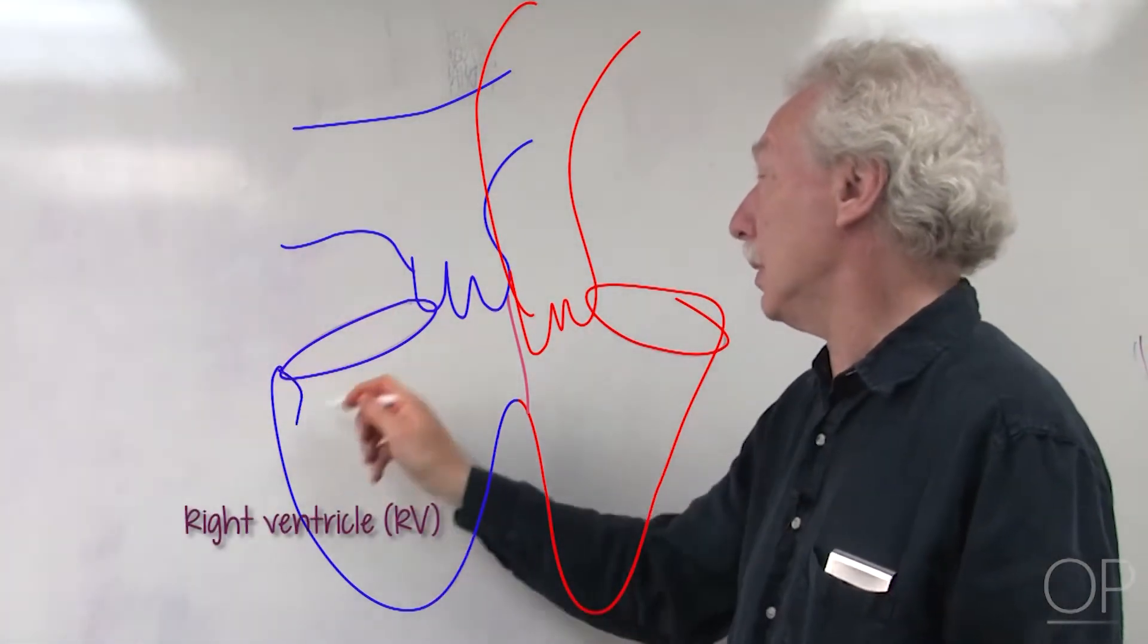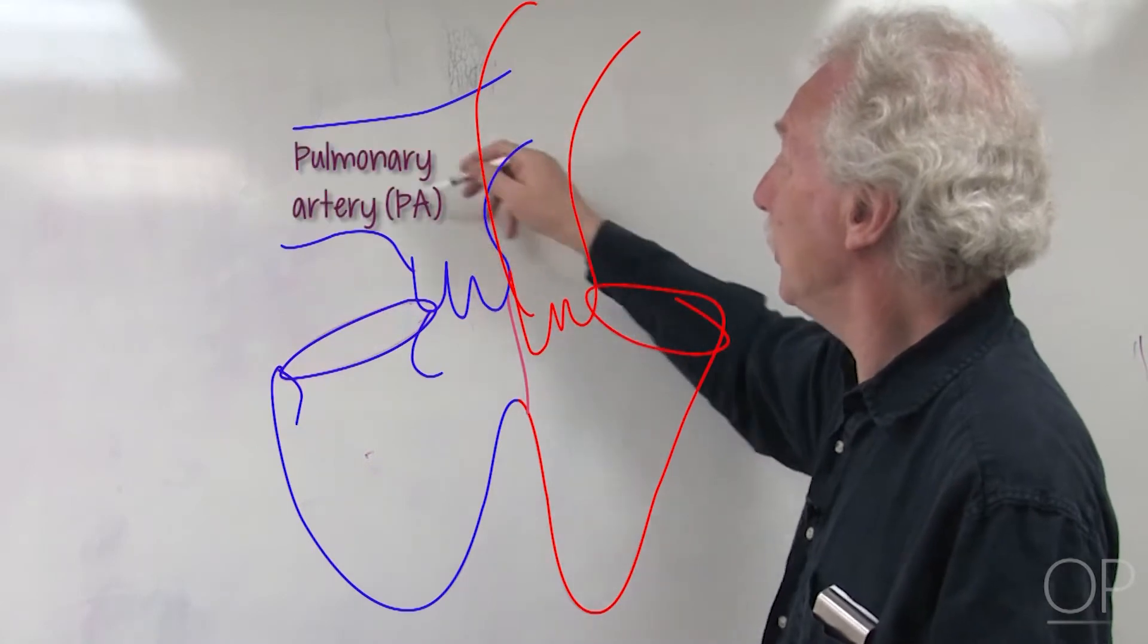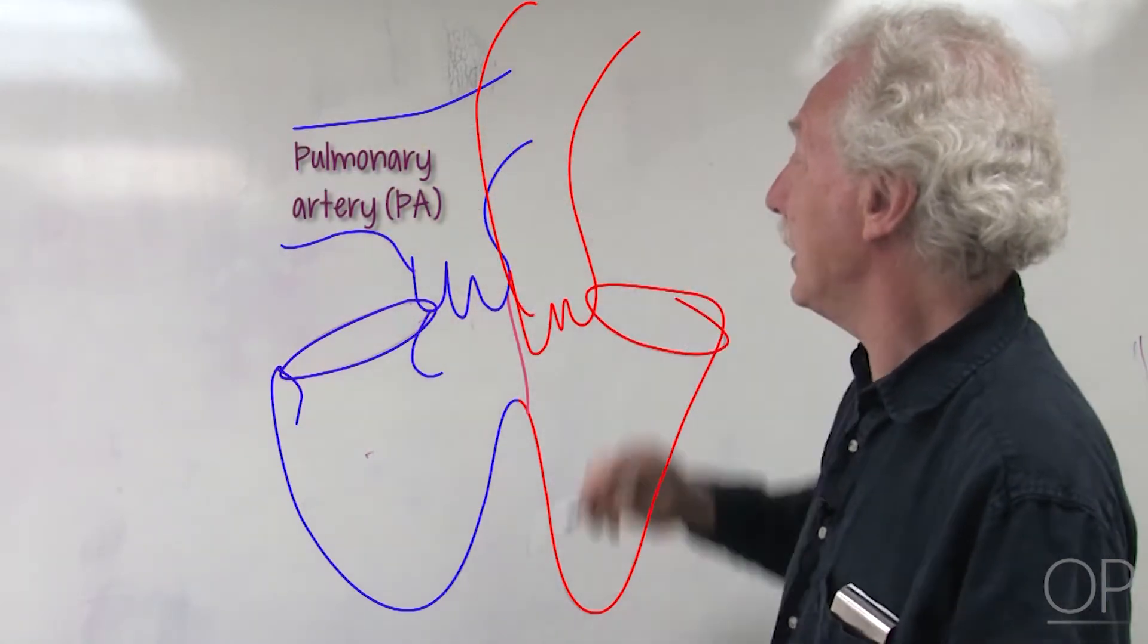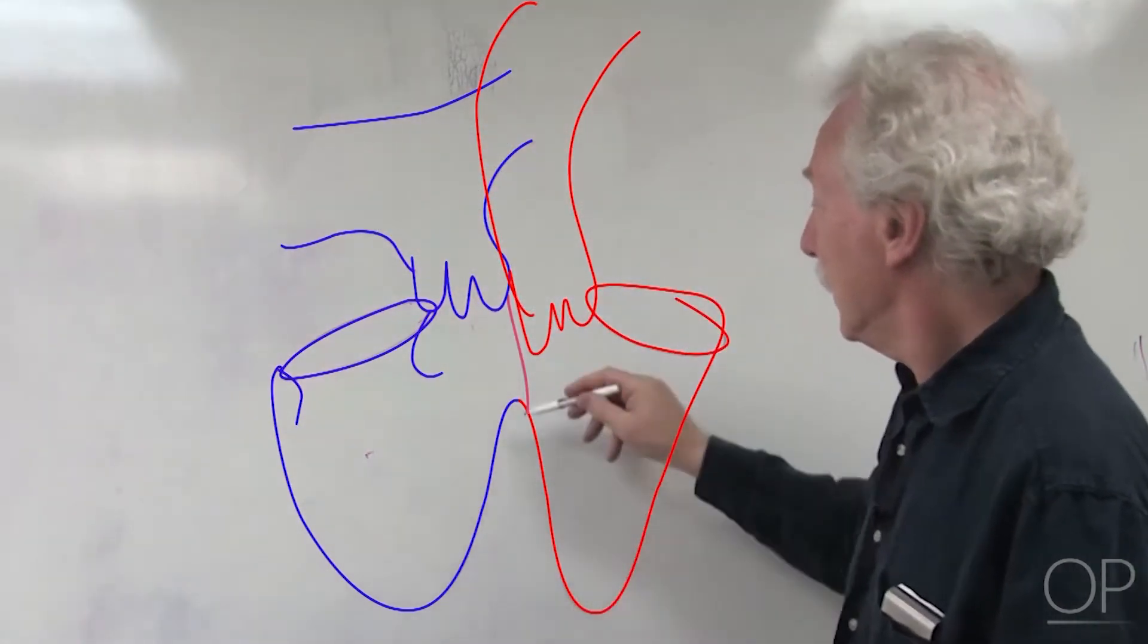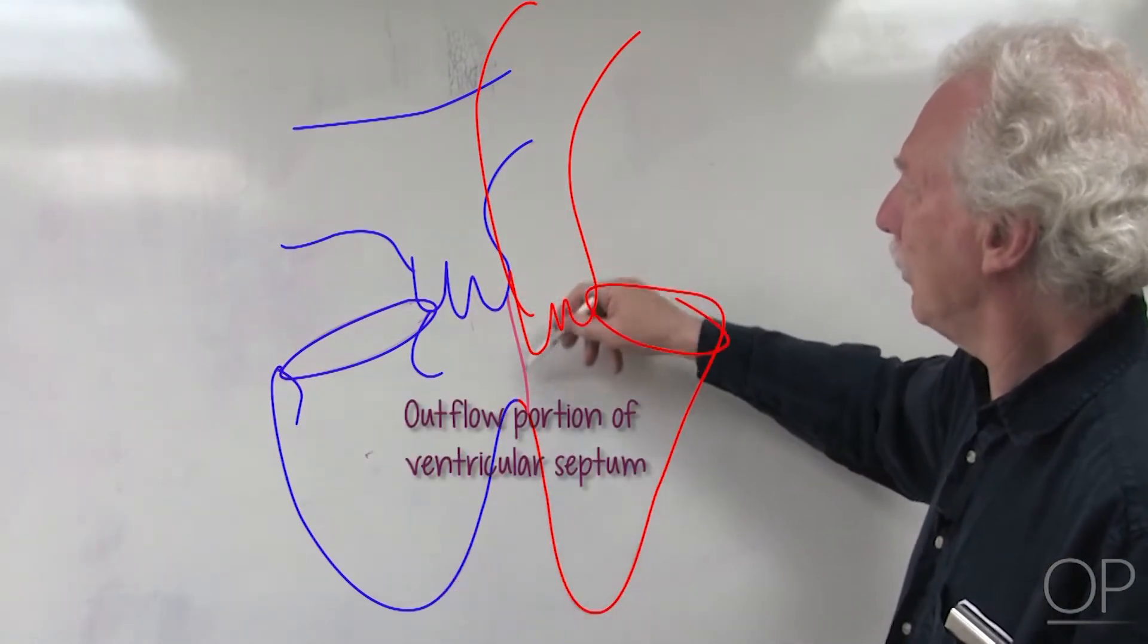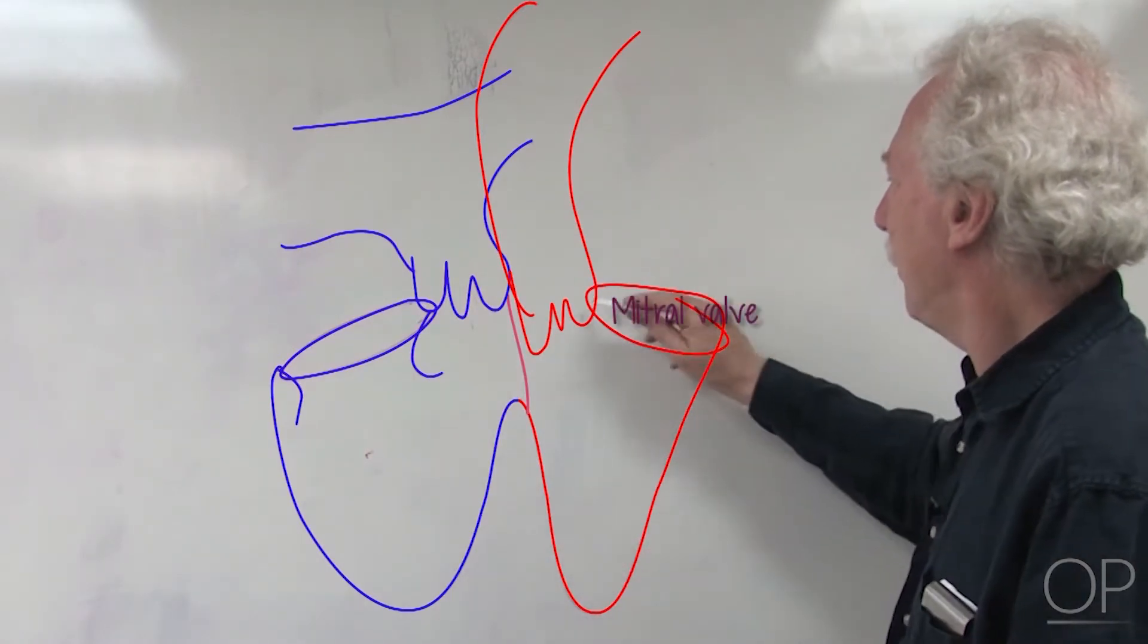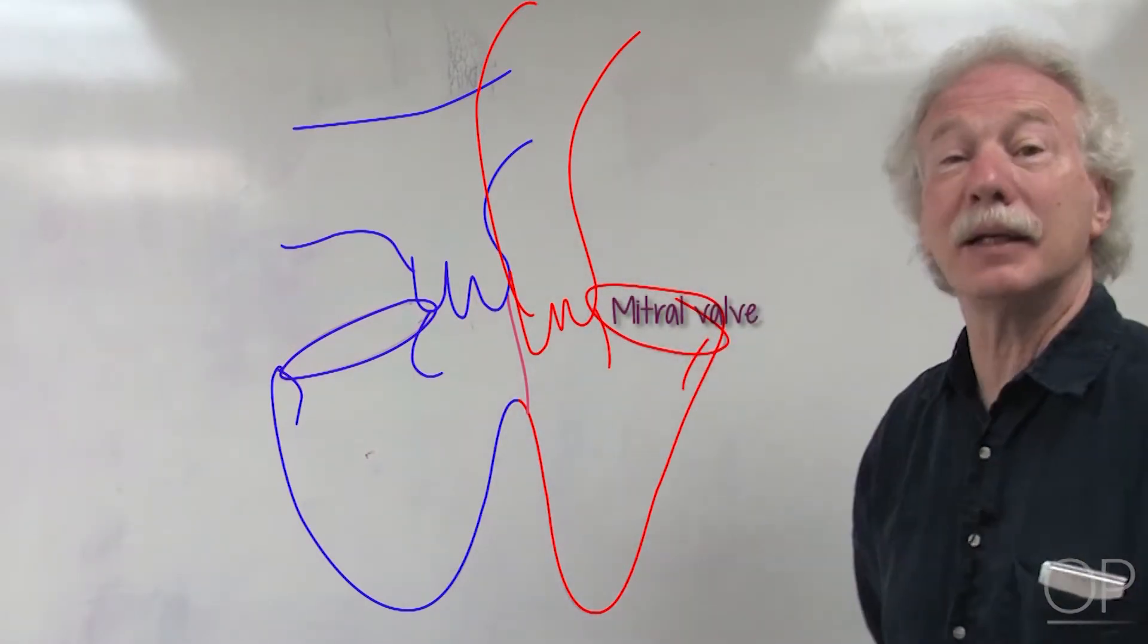We've got a right ventricle. Coming into the right ventricle is a tricuspid valve; leaving it is a pulmonary artery which branches into right and left sides. Here's the muscular part of the ventricular septum, the outflow portion of the ventricular septum, a left ventricle, mitral valve coming into the left ventricle, and the aorta.